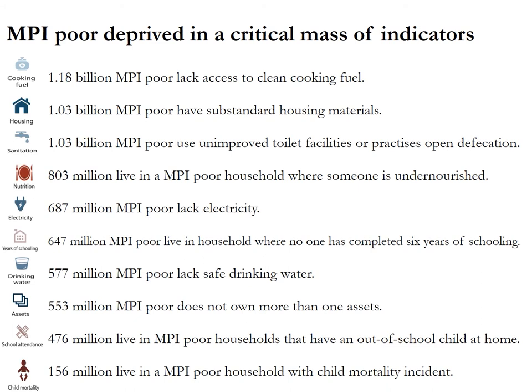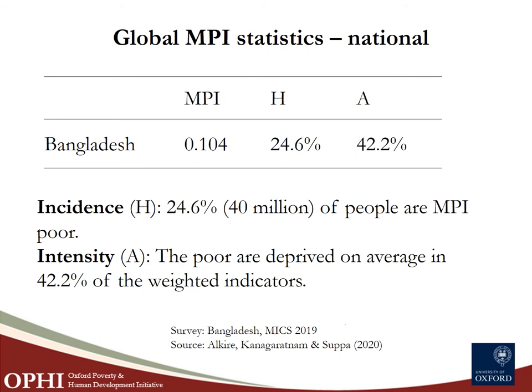The 1.3 billion MPI poor are deprived in a critical mass of indicators — over one billion are deprived in cooking fuel, housing, and sanitation. Looking at Bangladesh as an example from our updated surveys: close to 25% of the population are MPI poor, translating to 40 million people. Among the MPI poor in Bangladesh, they are deprived on average in 42% of the weighted indicators.